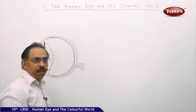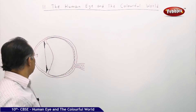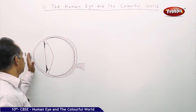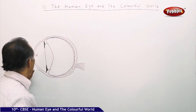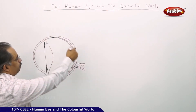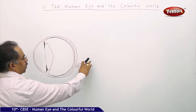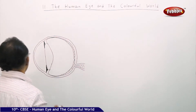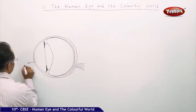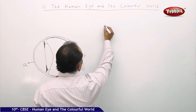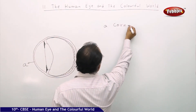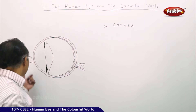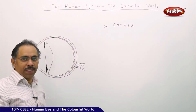Here we see the basic structure of the eye. You can see this is the lens — this is the front portion of the lens, and this is the rear portion. There is bending and projection of light. Let us see each and every part. The front portion here, let us call it A, is the cornea. It's a front layer where most of the refraction takes place.